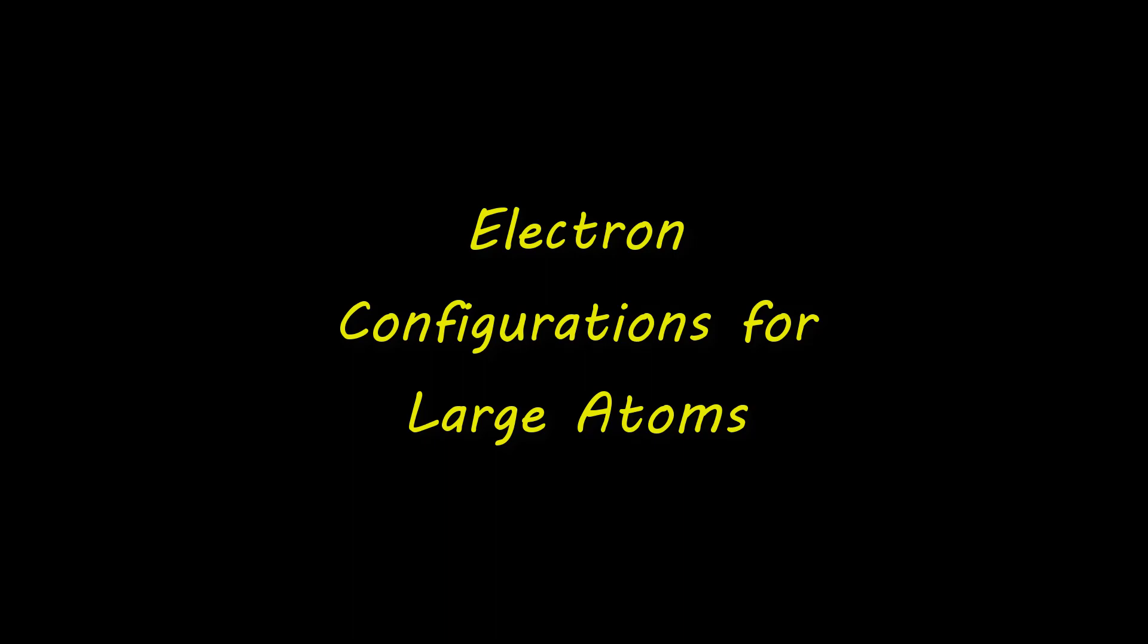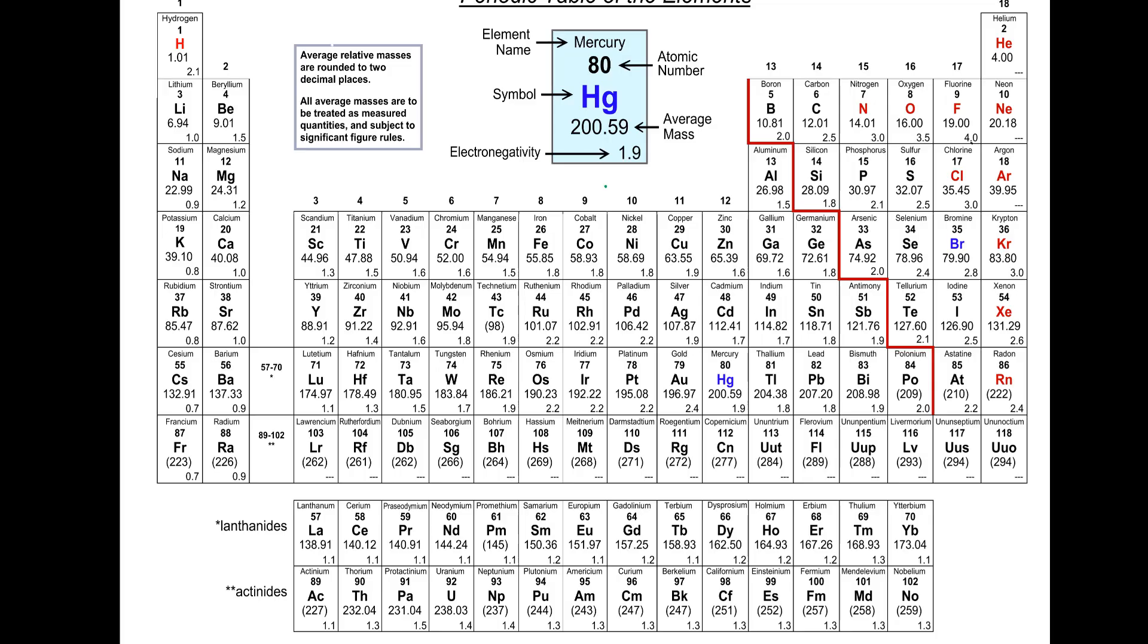So let's say, for example, that we are interested in determining the electron configuration of something bigger like bromine. Bromine has 35 electrons and it would be a task to have to go through the process that we just went through to write out the energy diagram and then populate electrons. So there's a shorter way to do this, and the periodic table is your guide.